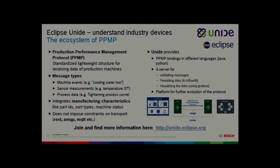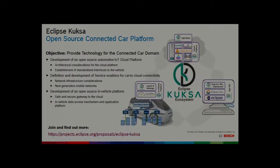A big challenge in IoT solutions is the amount of technology connected to it. Going deeper into specific domains, you need more and more technologies aligned with the generic ones. One example is Eclipse Unite — for industry — the idea of how to improve interaction with machines producing things. And we've already talked about Eclipse Kura, which is the idea of a connected car platform, with many domain-specific problems.